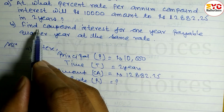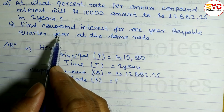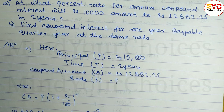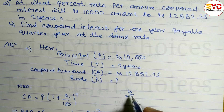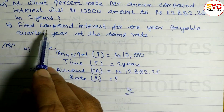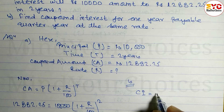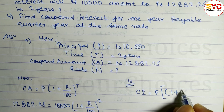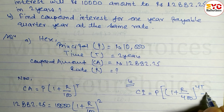Now question B: find compound interest for 1 year payable quarterly at the same rate. Rate is already found as 13.5 percent. Principle P is equal to 10,000. For quarterly compound interest the formula is CI equals P times (1 + r divided by 400) to the power 4t, minus 1.